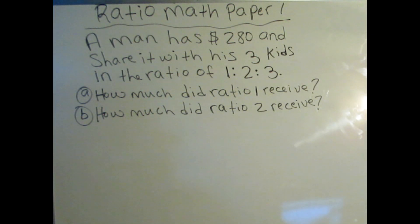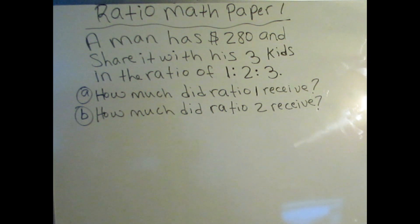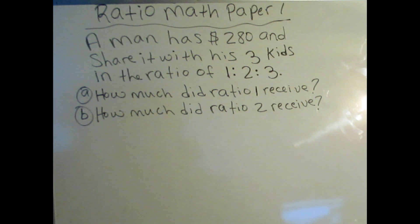Once again, welcome back students. We want to do a ratio problem from Maths Paper 1. A man has $280 and shares it with his three kids in a ratio of 1 to 2 to 3. The problem has parts A and B. Part A asks how much did ratio 1 receive, and Part B asks how much did ratio 2 receive. We want to find how much ratio 1 and ratio 2 receive. Remember, you can subscribe for more videos. So let's get right into the problem.